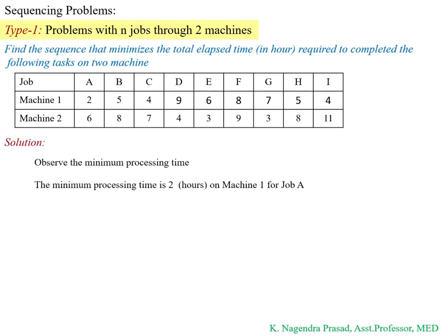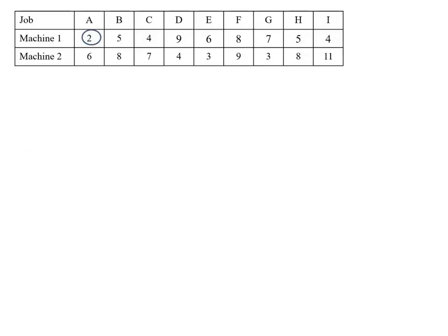The first step in our solution is to identify which job has the minimum processing time on which machine. Here we observe that the minimum processing time is 2 hours for job A on machine one. So mark that value and write the optimal sequence table.